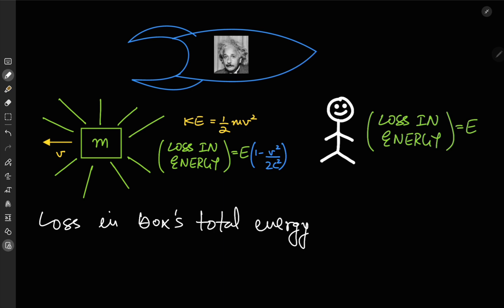But the values of this decrease in energy differ. You record a value of E, whereas Einstein records a lesser value of E times 1 minus v squared by 2c squared.